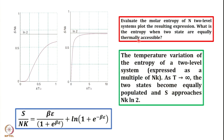Let us talk about what happens when temperature approaches zero. When T→0, β = 1/kT approaches infinity. There is infinity in the denominator of the first term, making it zero, and log(1) is also zero. So entropy approaches a value of zero — that is what you observe in the plot when temperature approaches zero.